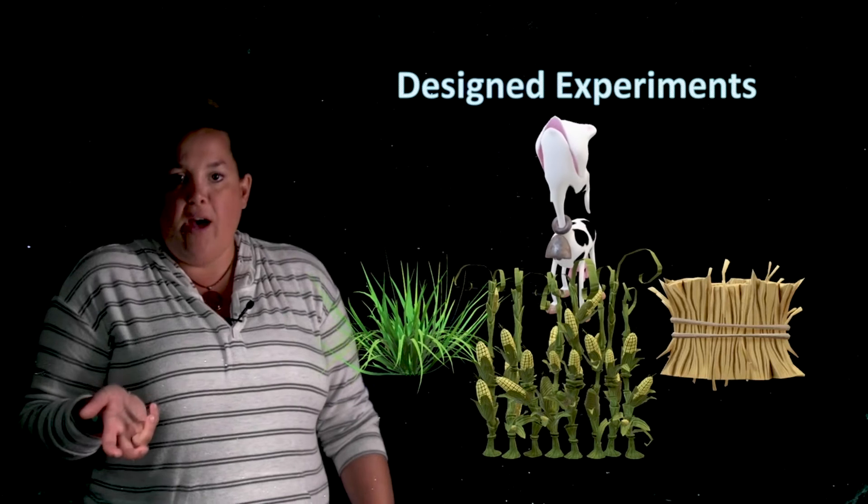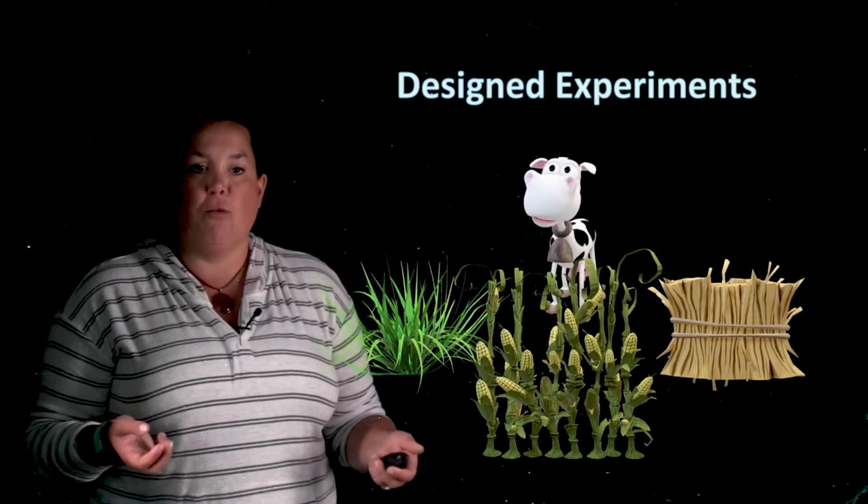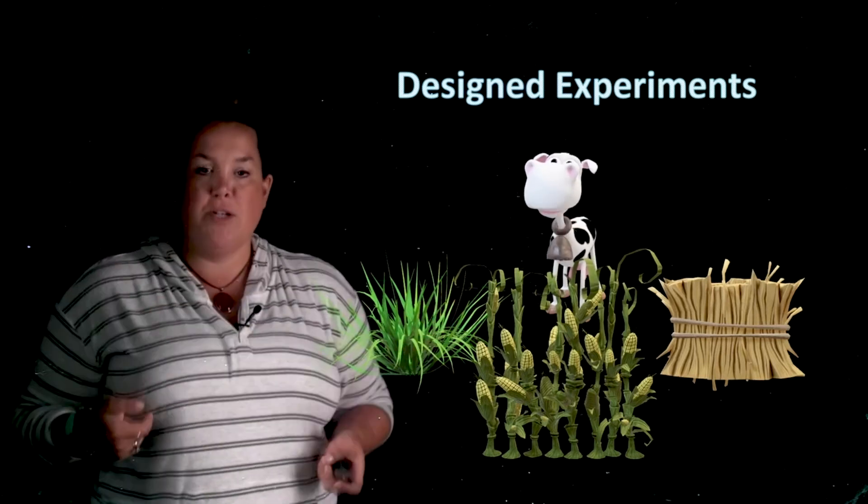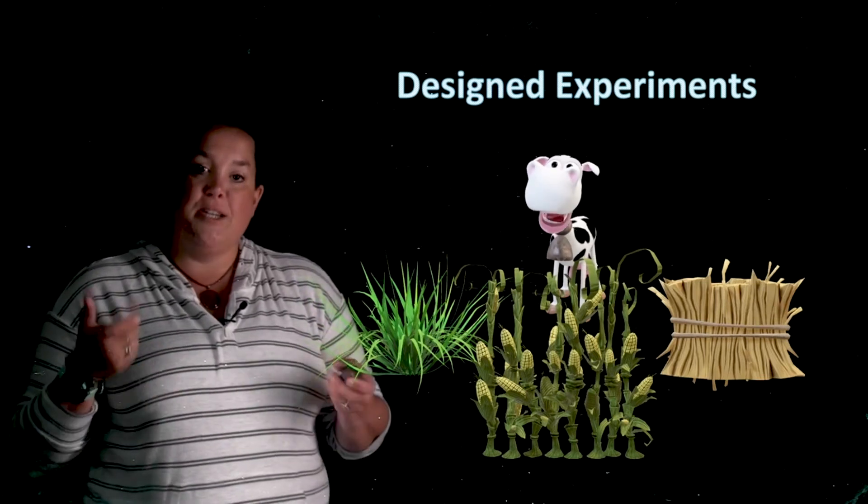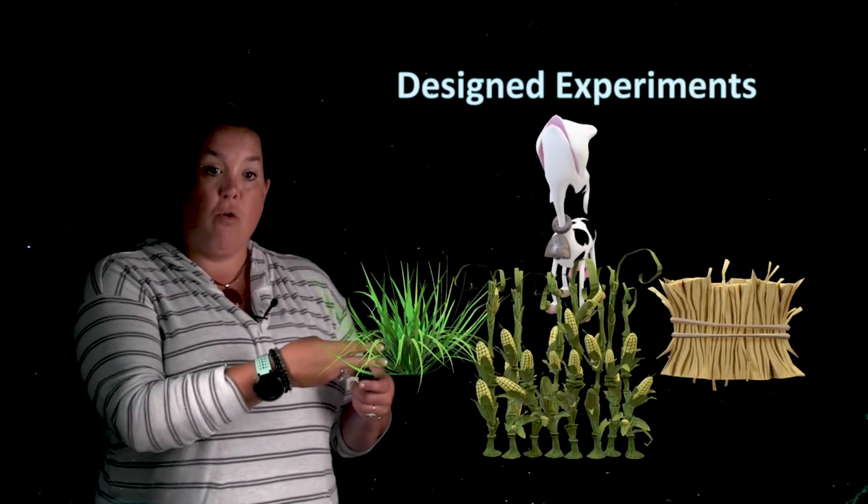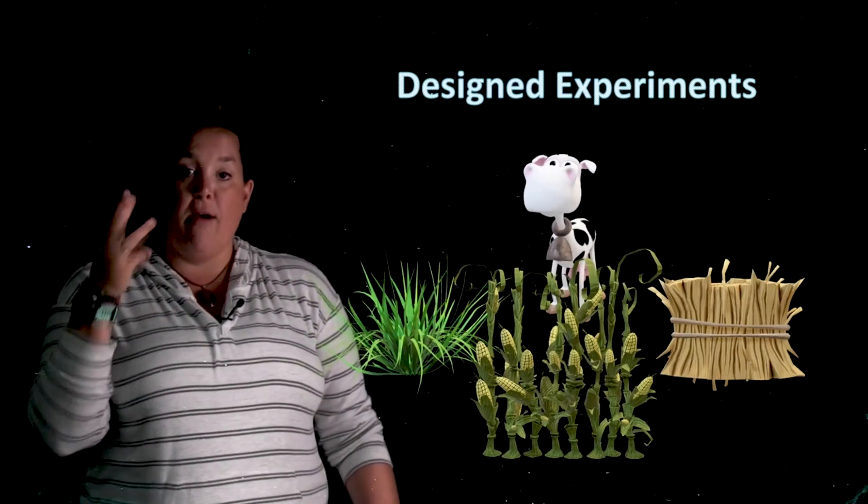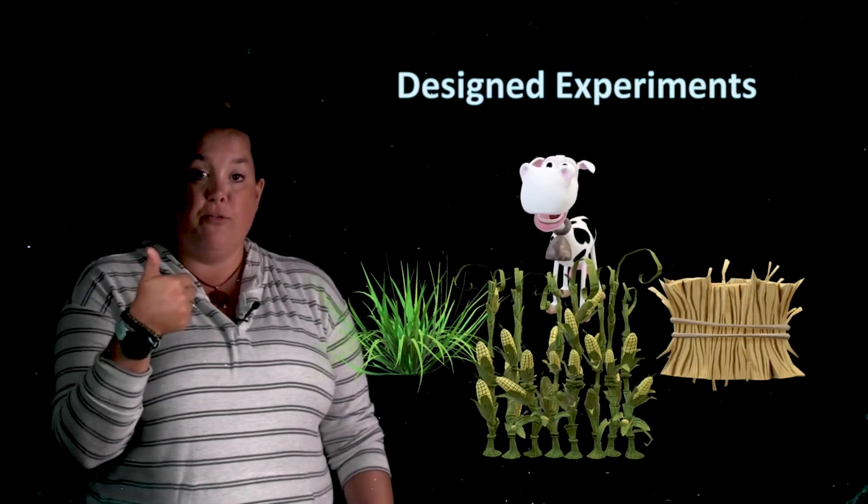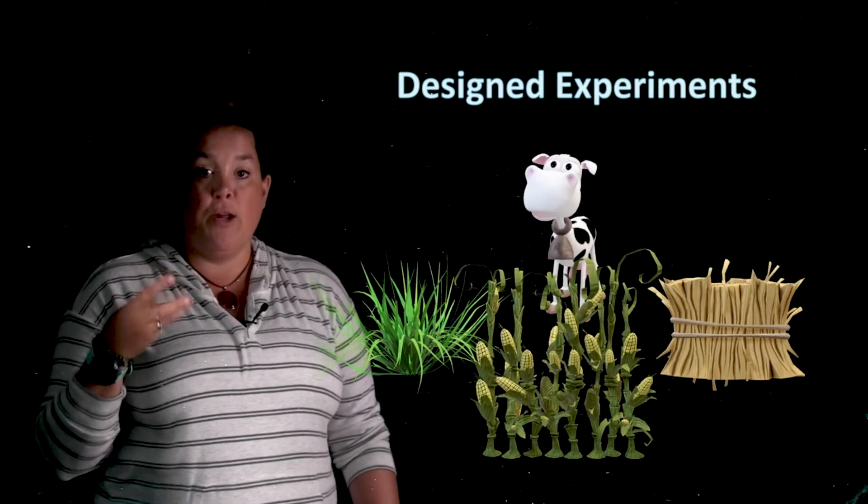The next thing we have is the factor or what are the levels for the factor? Well, our factor is what type of food they have. And then the different levels within that is going to be grass, corn, or hay. So we have three levels within the factor of food type: grass, corn, and hay.